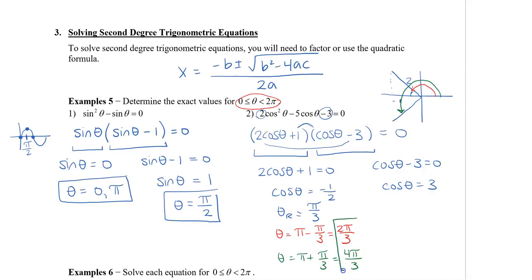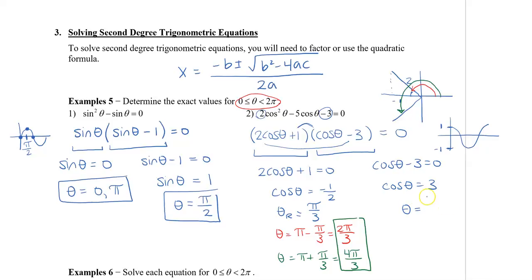Remember that π/3 is only the reference angle, so it's not part of the solution. For cosθ = 3, drawing the cosine graph shows the highest it can reach is 1 and the lowest is −1, so there's no way to reach 3. If you type this into a calculator it will give you an error. So cosθ = 3 has no solution. The only solutions for this equation are 2π/3 and 4π/3.